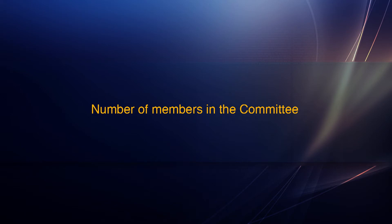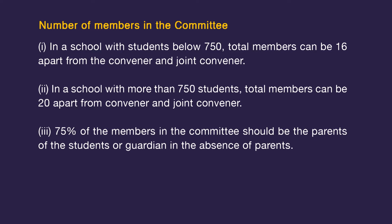Regarding the number of members in the committee: (1) In a school with students below 750, the total members can be 16 apart from the convener and joint convener. (2) In a school with more than 750 students, the total members can be 20 apart from convener and joint convener. (3) 75% of the members should be parents of students or guardians, and should include members of the mother parent-teacher association, parents of selected students, and parents or guardians of students belonging to the weaker sections of society.